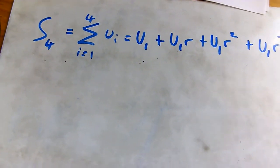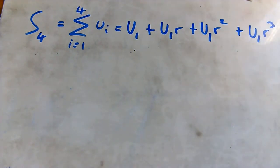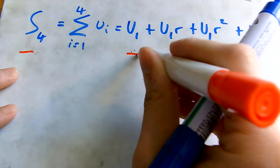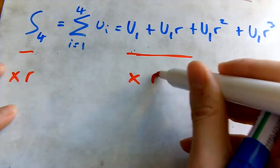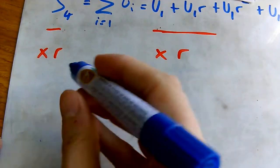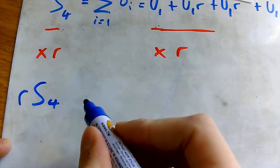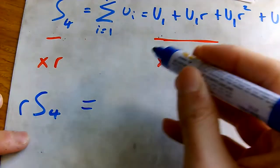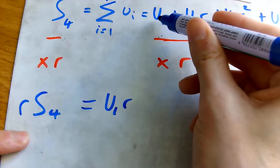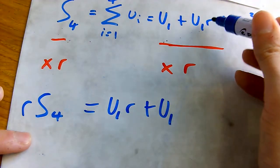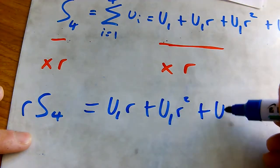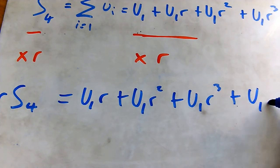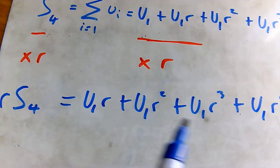A little trick we can use to get the formula is to multiply both sides by r, the common ratio. This gives us r·S₄ on the left side. On the right side, we multiply every single term by r: u₁r, then u₁r², then u₁r³, and the final term becomes u₁r⁴ — so the same terms but now everything's been multiplied by r.